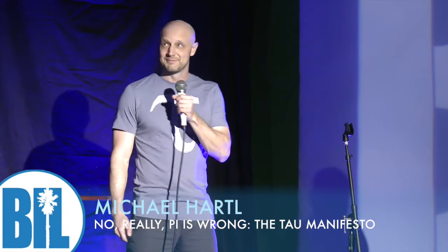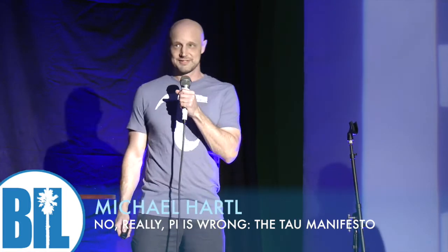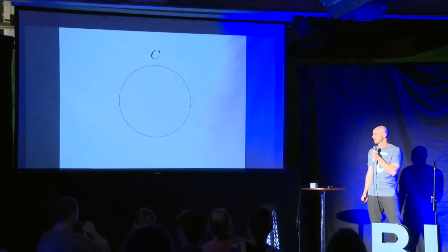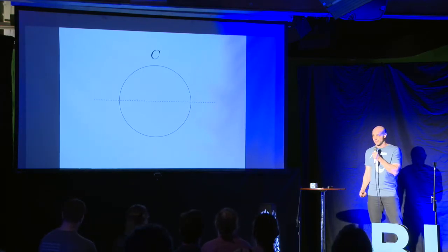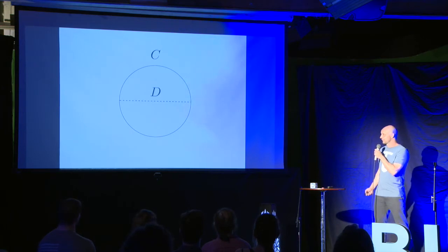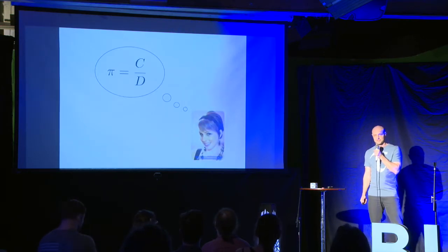Good afternoon everyone. My name is Michael Hartl and I'm the founder of Tau Day and author of the Tau Manifesto. The subject of the Tau Manifesto is the circle constant — the number that relates the circumference of a circle to its linear dimension. The traditional choice for that linear dimension is the width of the circle, the diameter d, and this leads to the traditional choice for the circle constant, c over d, usually called pi.